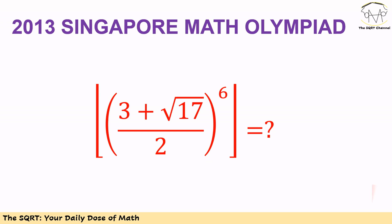Hello everyone. In this video we are going to talk about another problem from the Singapore Math Olympiad 2013. In this problem we have an expression and we need to evaluate it. The expression is the 6th power of (3 plus square root of 17) over 2, and we need to find this value and apply the floor function on top of it. Obviously we are not allowed to use any calculator. Before moving forward, make sure you pause the video to think about the problem.